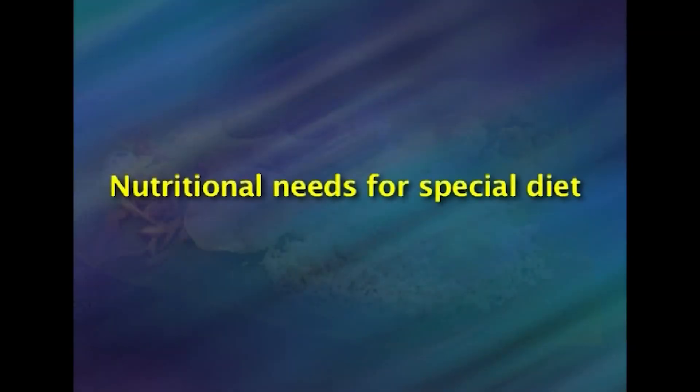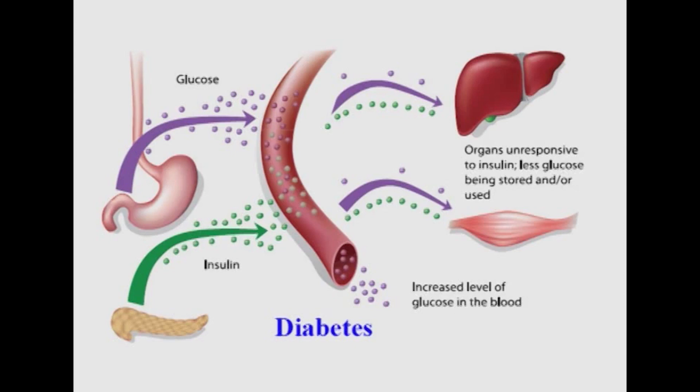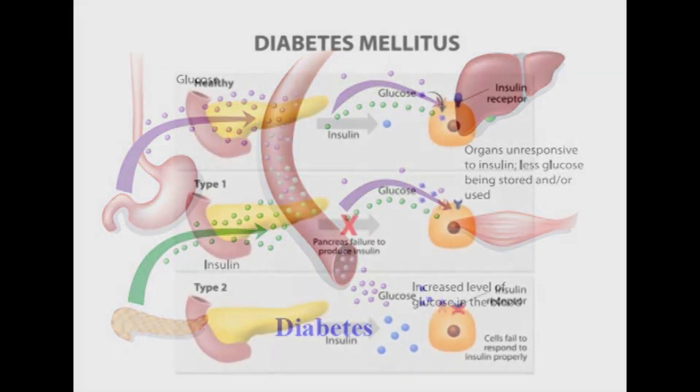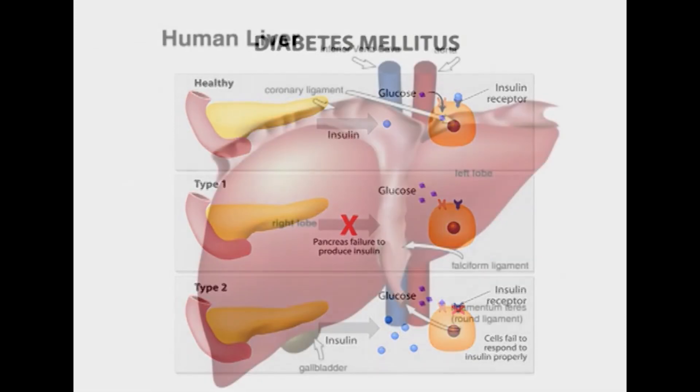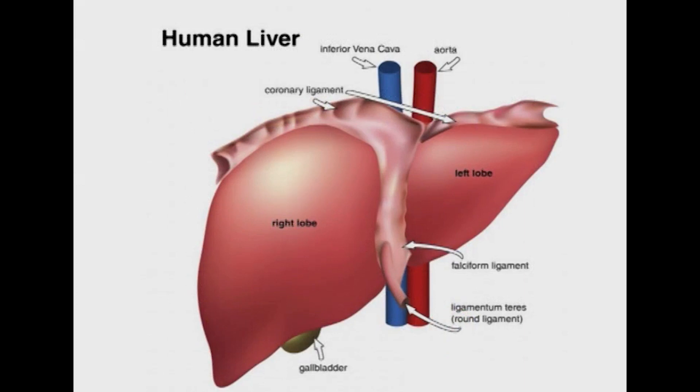Need for a special diet: A normal diet satisfies the nutritional needs of a healthy individual, but when a person falls sick, there is malfunctioning of parts of the body, and therefore the nutritional needs of a sick person change. For example, in diabetes the pancreas does not produce insulin, which is needed to digest sugars — in such a case, the normal amount of sugar in food will be harmful. Similarly, in jaundice there is malfunctioning of the liver, so digestion of fats is affected and normal amounts of fat will be harmful.